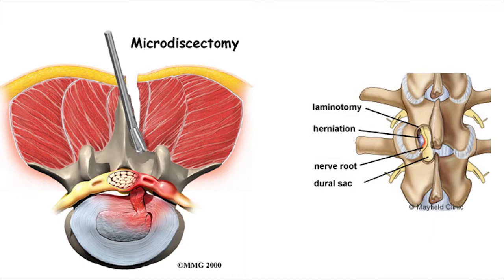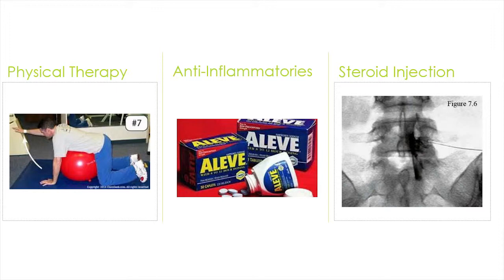Open discectomy uses surgery to remove part of the damaged disc to relieve pressure on the nerve tissue and alleviate pain. The surgery involves a small incision over the lower back, removal of some ligament and bone material to access the disc, and removal of disc material causing pressure. Not all patients with herniated discs are candidates for open surgery — most find relief with non-surgical means such as rest, physical therapy, anti-inflammatories, or epidural injections. However, sometimes pain does not respond and may require more aggressive intervention.